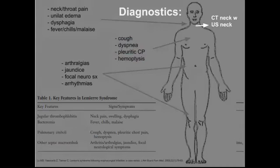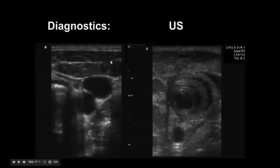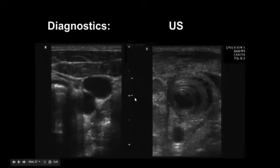As far as diagnostics, for the initial primary infection and the thrombus of the IJ, CT neck with contrast and also ultrasound of the neck can be diagnostic. Here's an example of a normal IJ — and remember, we're really good at looking at this in the ER. We look at IJs all the time for central lines, so you should be well aware of what this anatomy looks like. Over here you can see clot, a lot of soft tissue swelling, and even some surrounding edema around that IJ.